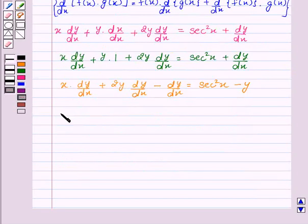Now on taking dy by dx common, we get dy by dx times (x plus 2y minus 1) equals sec squared x minus y.